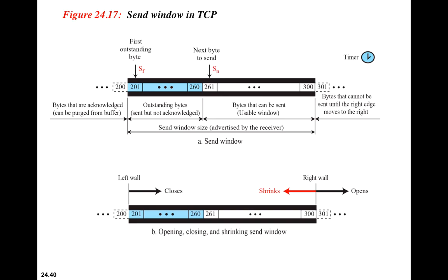So this means we have four windows in total if we consider both sides. In this diagram, at the sender, we have the buffer. The buffer contains packets 200, 199, 198, 197 and so on on one side, and on the remaining side of the buffer we have packets 301, 302, 303, 304 and so on.